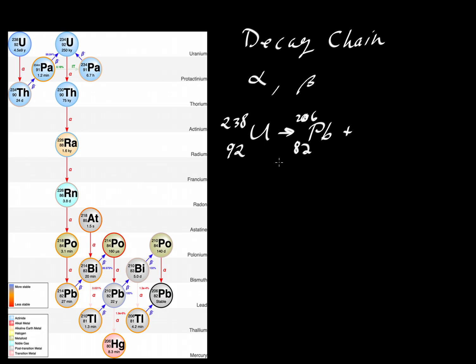that chain is going to involve the release of eight alpha particles and a total of six beta particles. Those beta particles should have a minus sign. And there's going to be electrons that are being released from the nucleus as a neutron converts into a proton.